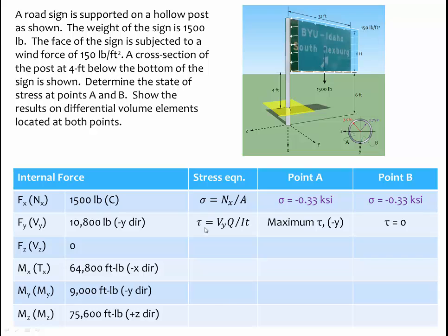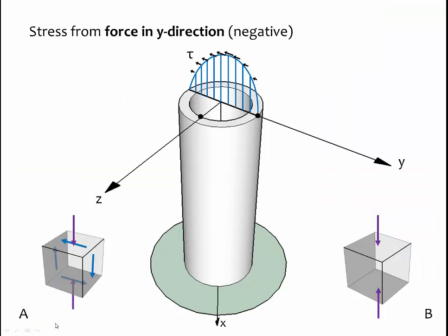Back to our table, our stress equation is shown. At point A we are going to have a maximum value of shear, and it will be pointing in the negative y direction. At point B, our shear stress is zero. Now let's calculate the value of shear stress on element A.